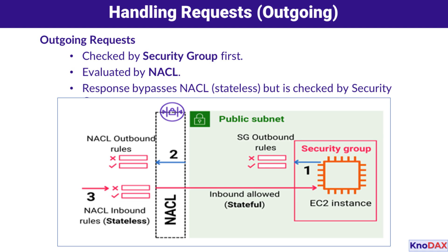In step three, we consider the NACL's inbound rules for the response. Since NACLs are stateless, the response traffic has to match an allow rule in the NACL's inbound rules to re-enter the subnet. If it doesn't, the response is denied — even though the original request was allowed. The layered security approach ensures that both the security group and NACL work together to protect your instances and subnets.